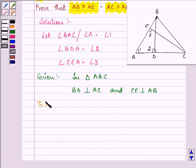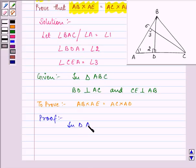We need to prove that AB into AE is equal to AC into AD. So let us start with our proof. Now,